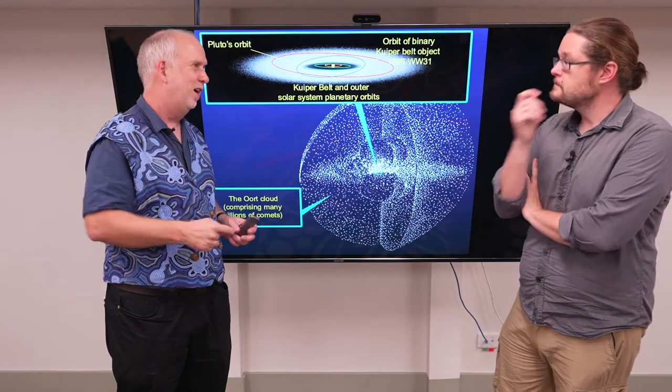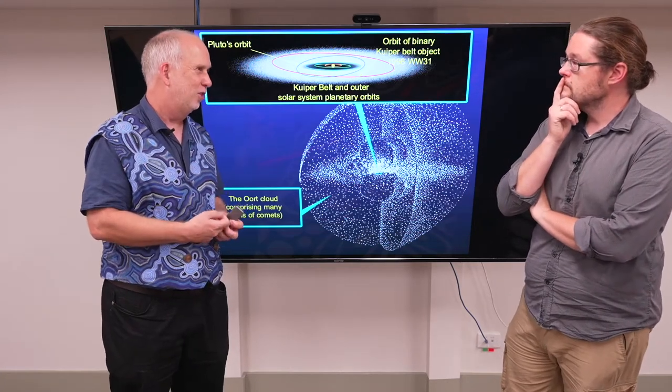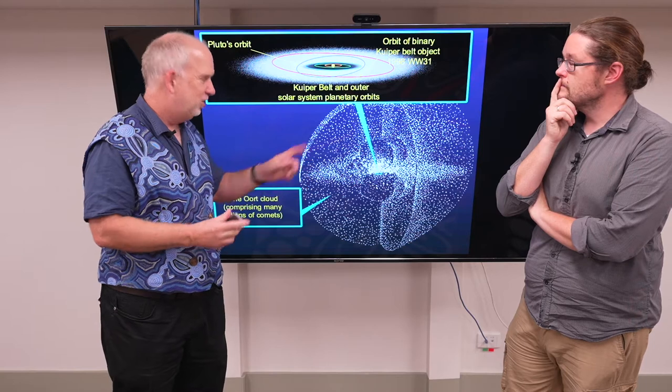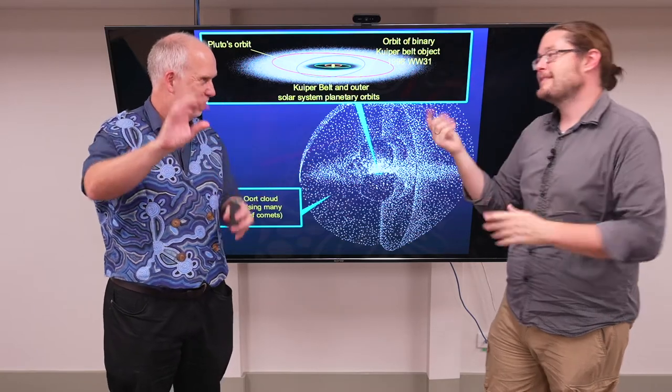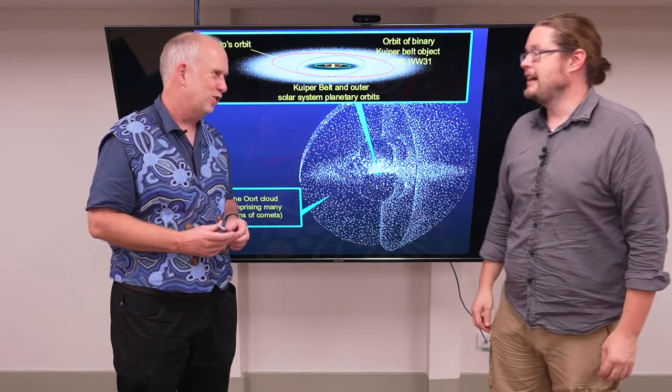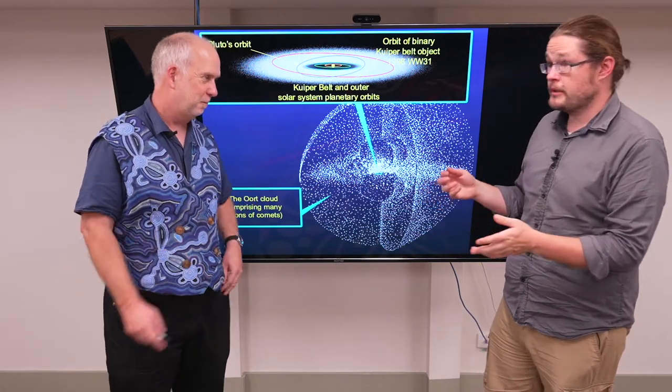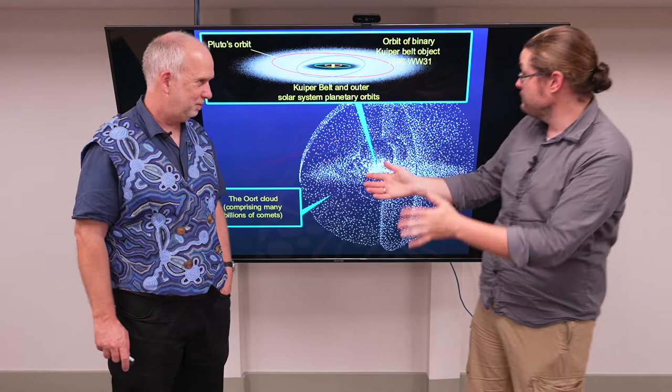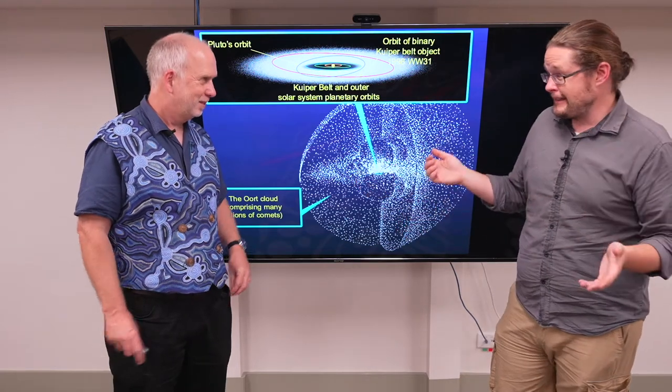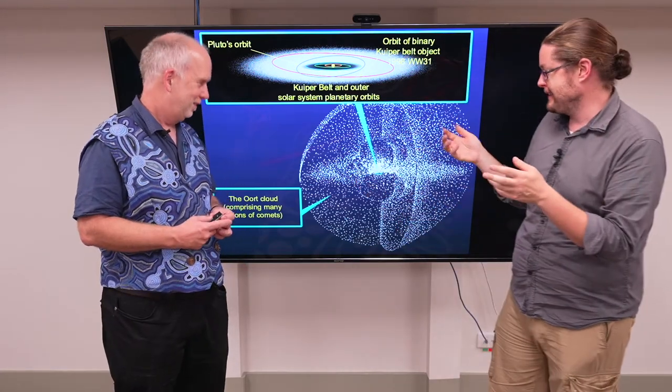People thought maybe you could watch them go in front of another star, so you can see them block out the light. And there have been attempts to do this. The trouble is, one of these things goes in front of the disk of a star, it's only going to block a very small fraction of the light. But maybe that's possible. I mean, we've gotten better techniques of doing this with exoplanets and even now exomoons, so it seems plausible for a few. But I don't think we're ever going to be finding millions of these things.